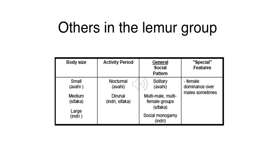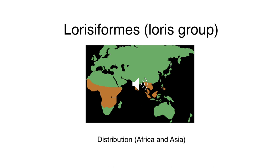Just a recap on the lemur group: make sure you're aware there is variation in body size, activity period, and social patterns across individual species within Indri, Sifaka, and other groups - that's where your book will be handy. The second category in our prosimians or Strepsirrhini is our loris group, distributed across Africa and Asia.